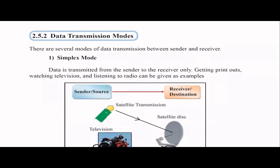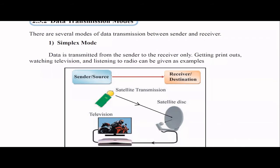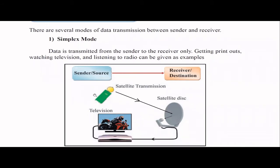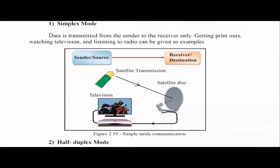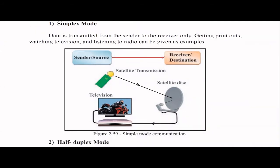When it comes to data transmission modes, the first one is simplex mode. In this mode, data is always transmitted from sender to receiver — the receiver does nothing. For example, when you watch TV, you cannot give any input to the channel; the channel just broadcasts content. Similarly, listening to the radio or getting a printout are examples of simplex mode.